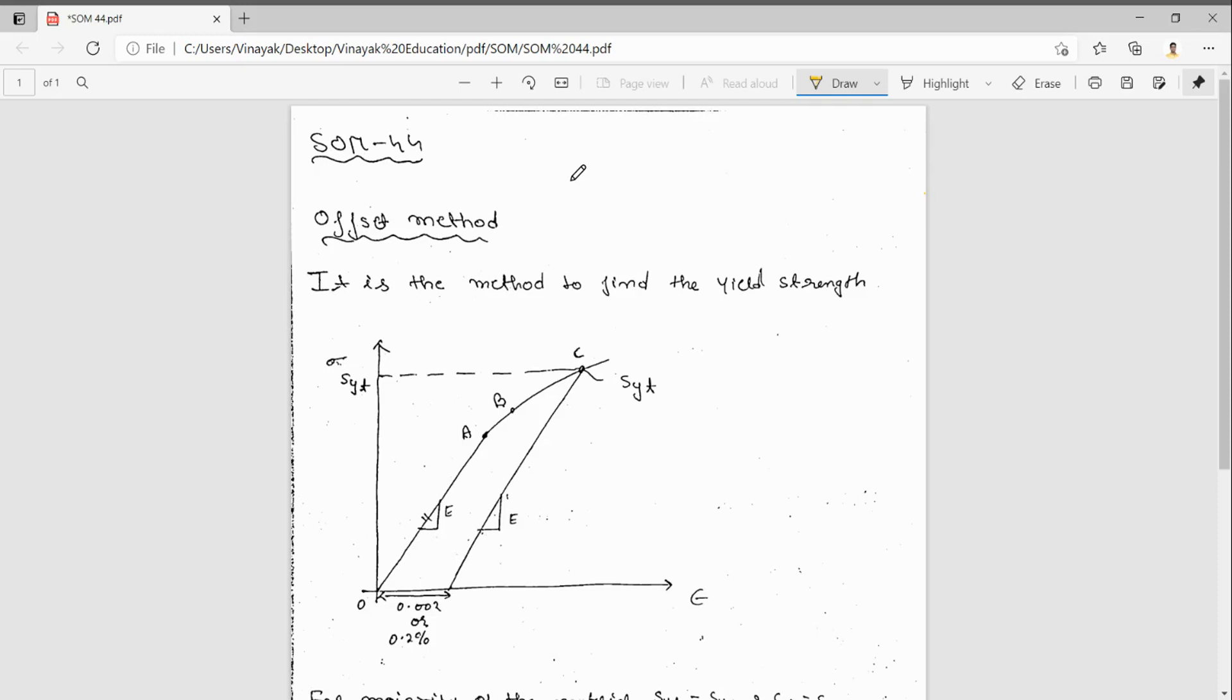And the second one is ultimate strength. Assuming if the yield strength of the material is not known, how can you find that yield strength? That is by using the offset method. This is a method to find the yield strength.